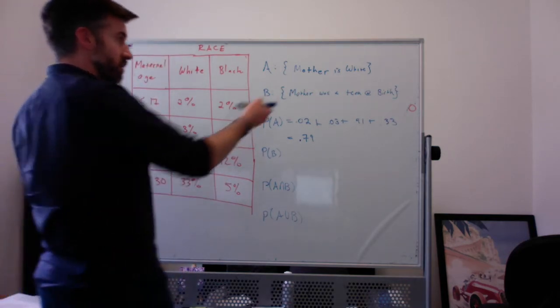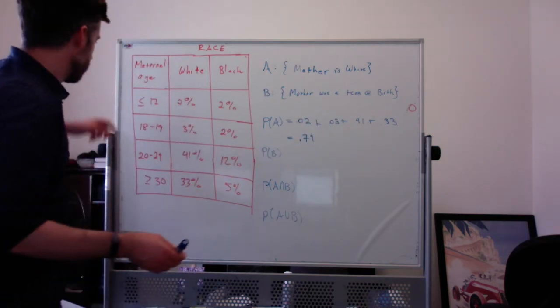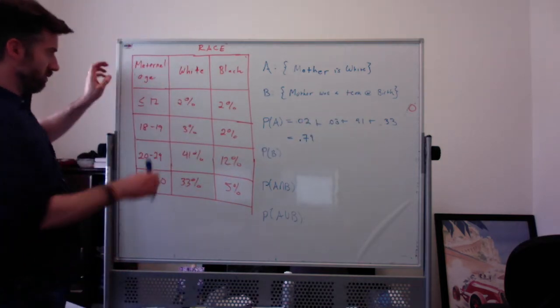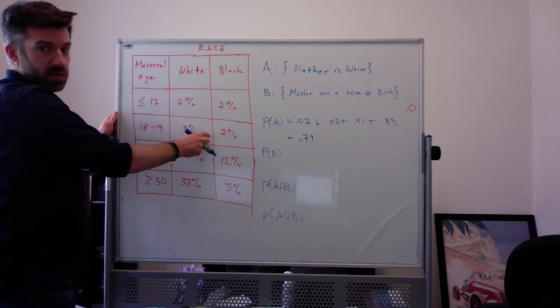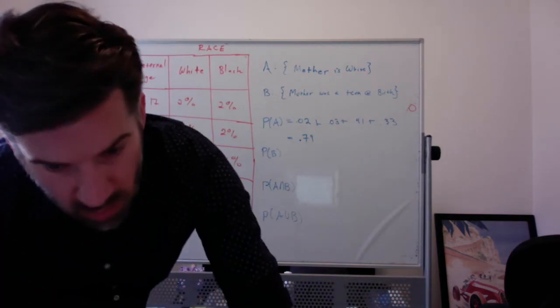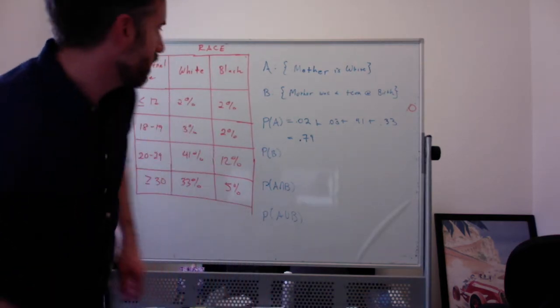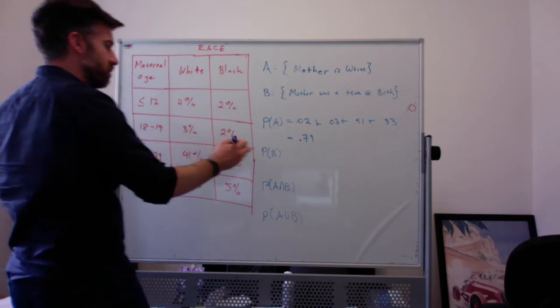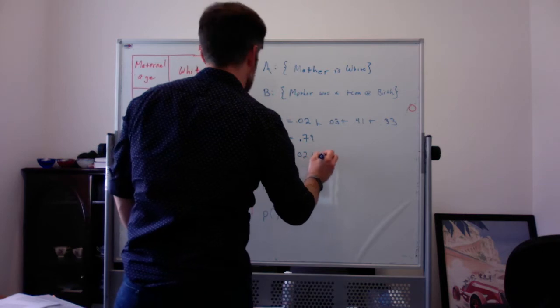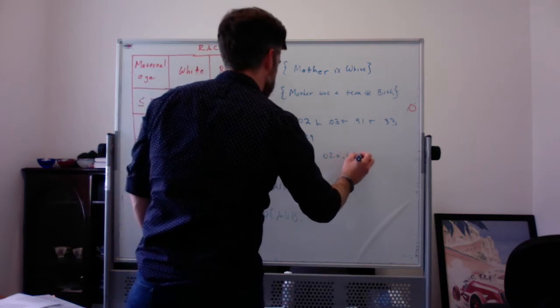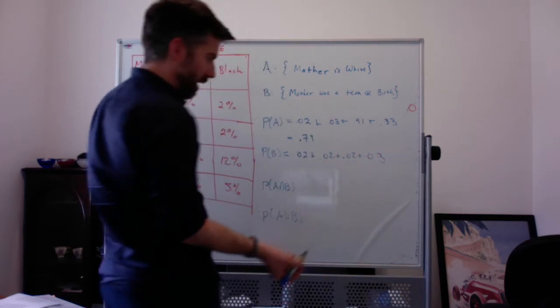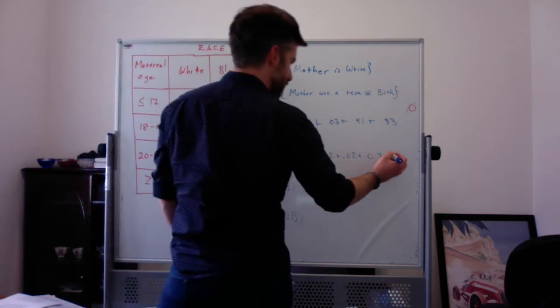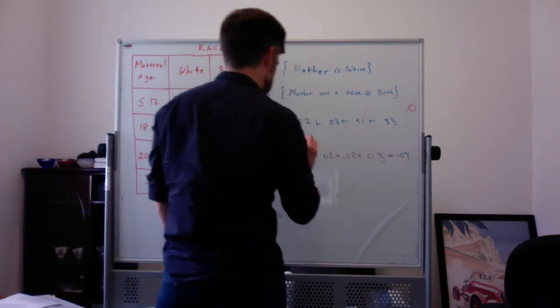The probability of B, the mother a teen at birth. We have to capture all the teens. So that's everything in this box, this box, this box, and this box. And so that's going to be 0.02 plus 0.02 plus 0.03 plus 0.02. So that's going to be 0.09, or 9%.